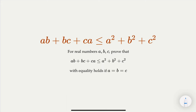We're going to prove this inequality, which is very common and pretty much a textbook problem. For real numbers a, b, c, we want to prove that the sum of pairwise products — ab + bc + ca — is less than or equal to the sum of squares a² + b² + c², with equality when all numbers are equal to each other. Think about it and try to prove it before continuing.